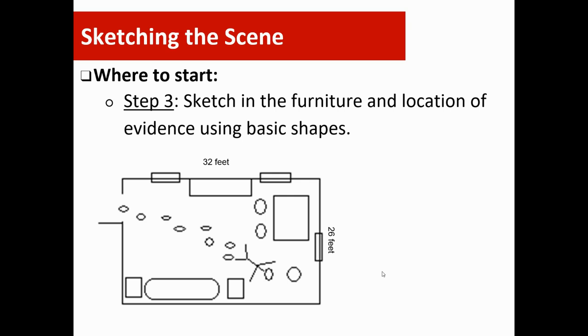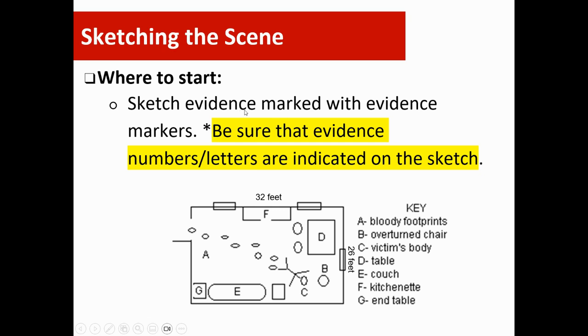Step three, sketch in any furniture or immovable pieces at the crime scene. If this is an outdoor crime scene, you might have a tree. Here we have an indoor crime scene, so sketch any furniture or anything important to understanding the layout. Step four, sketch evidence marked with evidence markers. Remember, when working a crime scene, prior to the sketch, evidence has been marked and photographed. It's very important that evidence shows up on the sketch.